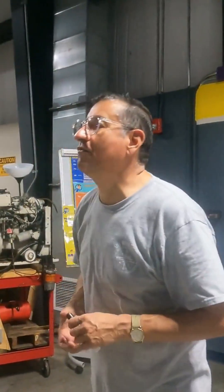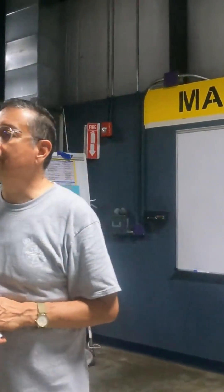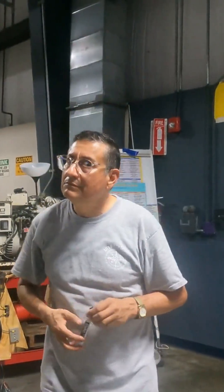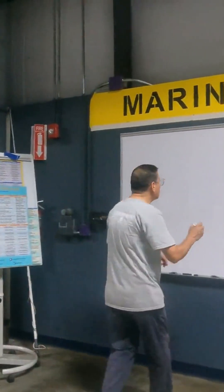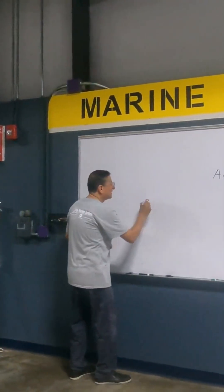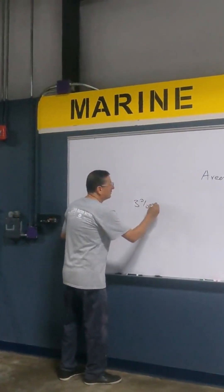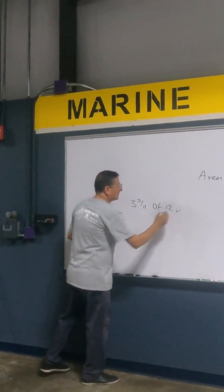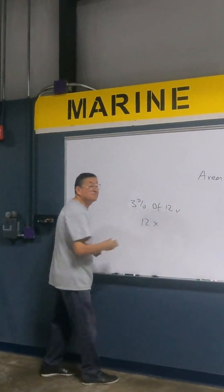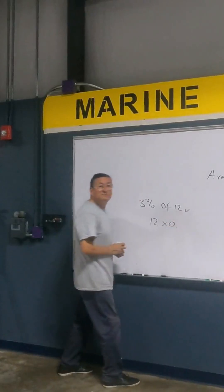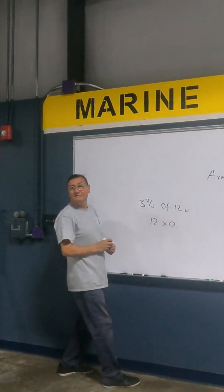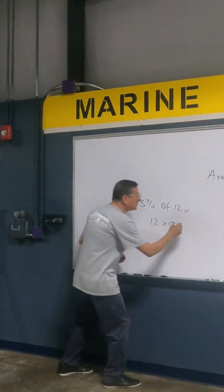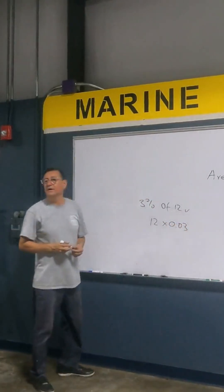How much is 3% of 12 volts? It's 12 times 0.03. This equals the 3% voltage drop value.